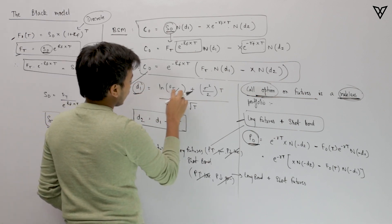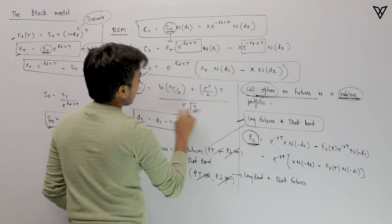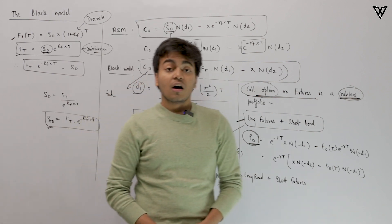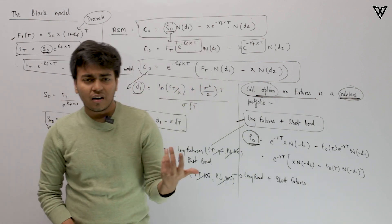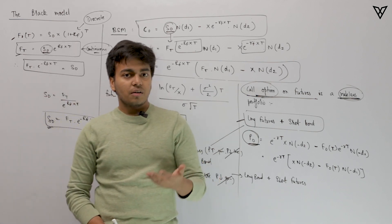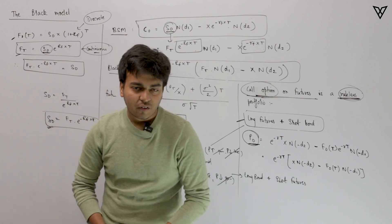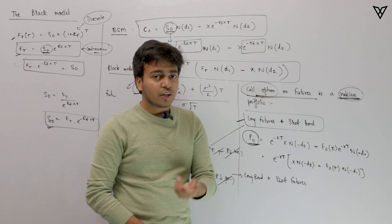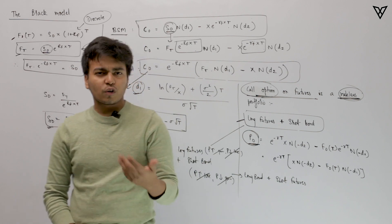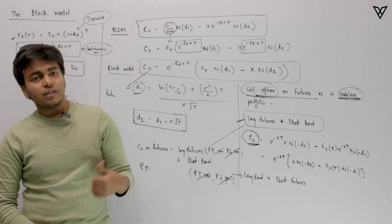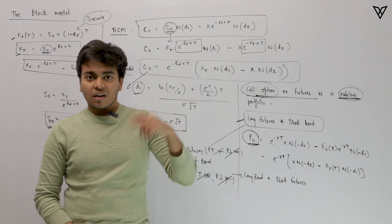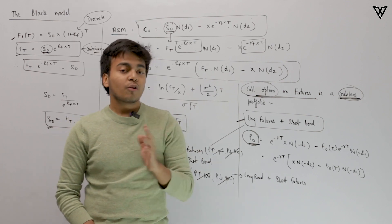For d1 we use: [ln(F(t)/X) + (σ²/2) × t] / (σ√t), and d2 is simply d1 − σ√t. This is how the Black model works — just a variant of the BSM model. We do not really expect many numerical questions from these two models, but the conceptual understanding should be solid. Make sure you have a good grip on that. Thank you.